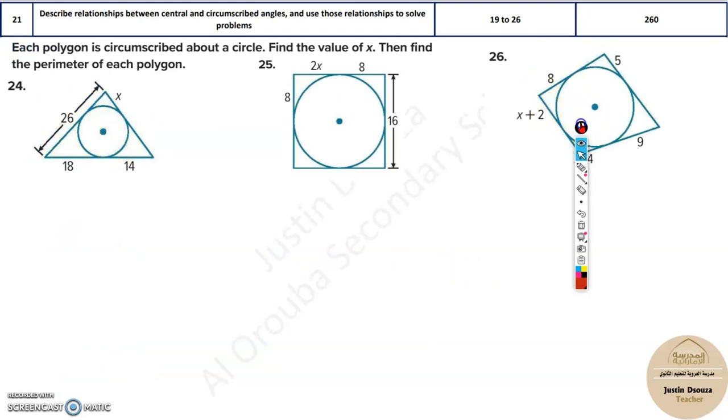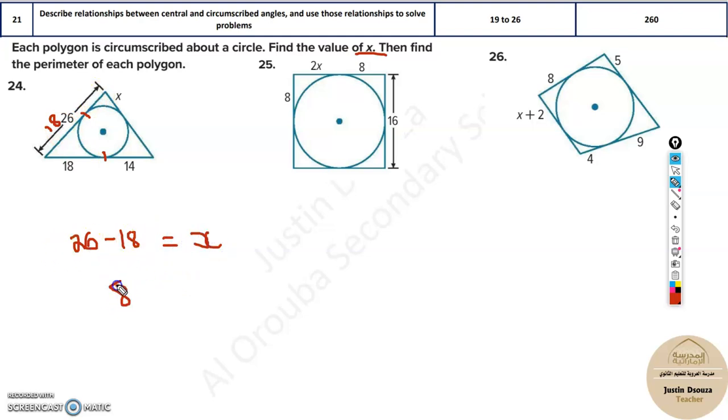Same thing over here. But now, over here, you can see they have given unknown values, say x. Or over here, you can say 2x. You need to find the value of x and then the perimeter. So what can you do? How do you find x? Now, I know the entire length is 26. This much is 18. So what is this much over here? It's 8. So all you need to do is 26 minus 18. That will be equal to x because x is so much, right? That is 26 minus 18 equals x. So that is 8. That is the value of x.